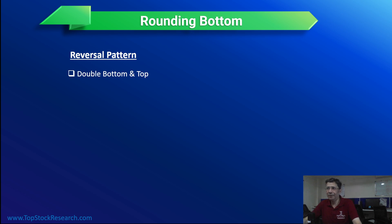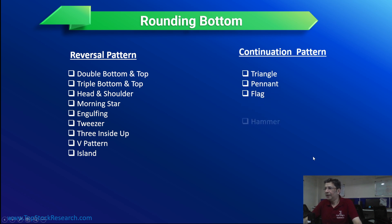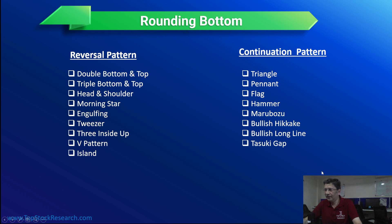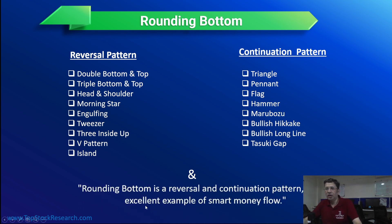Rounding bottom is typically a reversal pattern. We have quite a few reversal patterns — double top, bottom, triple top, head and shoulder, morning star, island reversal, and V pattern is something we'll be launching this week. We also have continuation patterns like triangle, pennant, flag, and hammer. Rounding bottom falls under reversal, but I believe it is also part of continuation patterns. This particular pattern also gives us an opportunity to understand smart money flow and weak money flow.